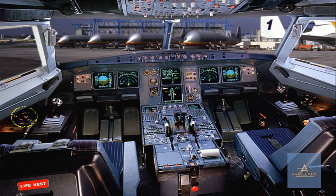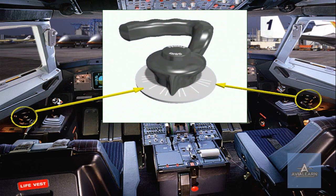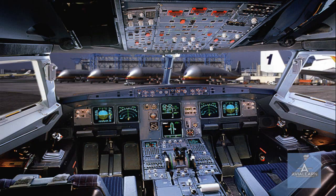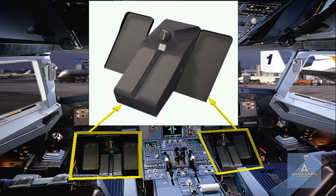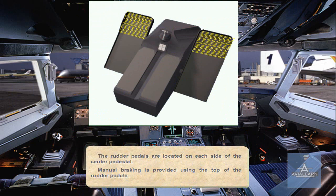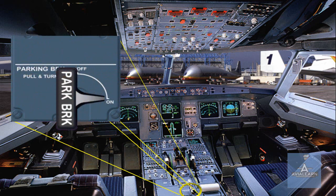The steering hand wheels are located on each side of the cockpit so either pilot can taxi the aircraft. The rudder pedals can also be used to steer the aircraft and are located on each side of the centre pedestal. Manual braking is provided using the top of the rudder pedals. The parking brake handle is located on the centre pedestal.